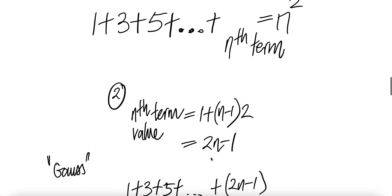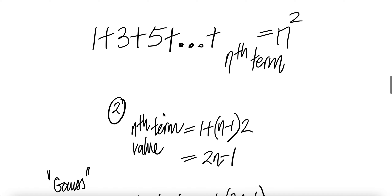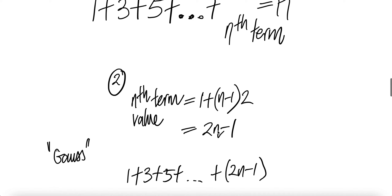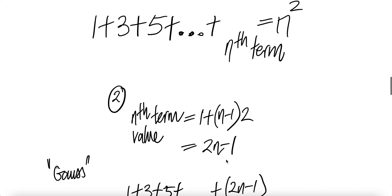In the second way, we're going to add n terms. We want to figure out the value of the nth term. The first term value is one, second term is three, third term is five. The nth term value is given by the first term plus n minus one times the common difference two. That gives two n, and one minus two is minus one, so the value of the nth term is two n minus one.